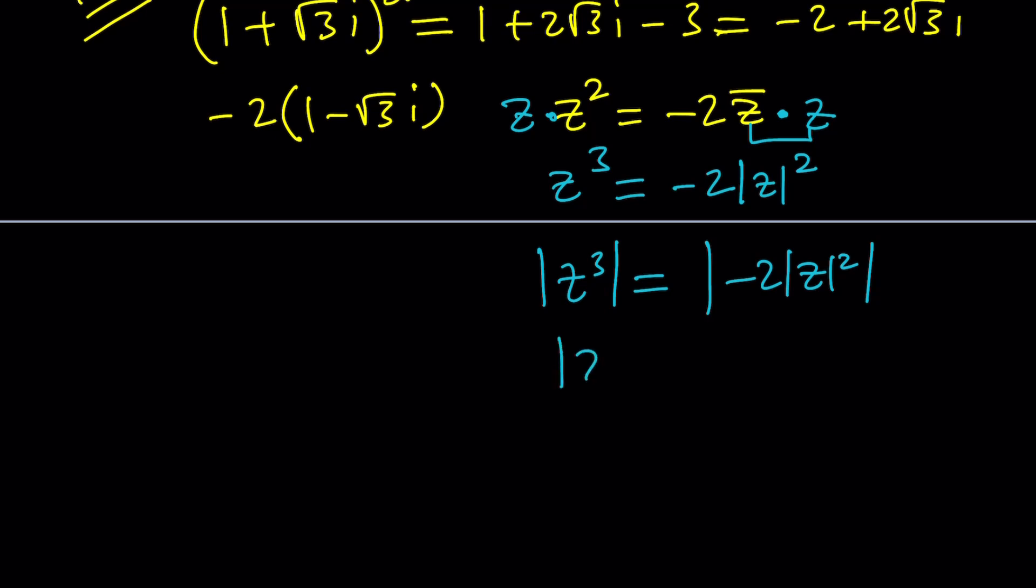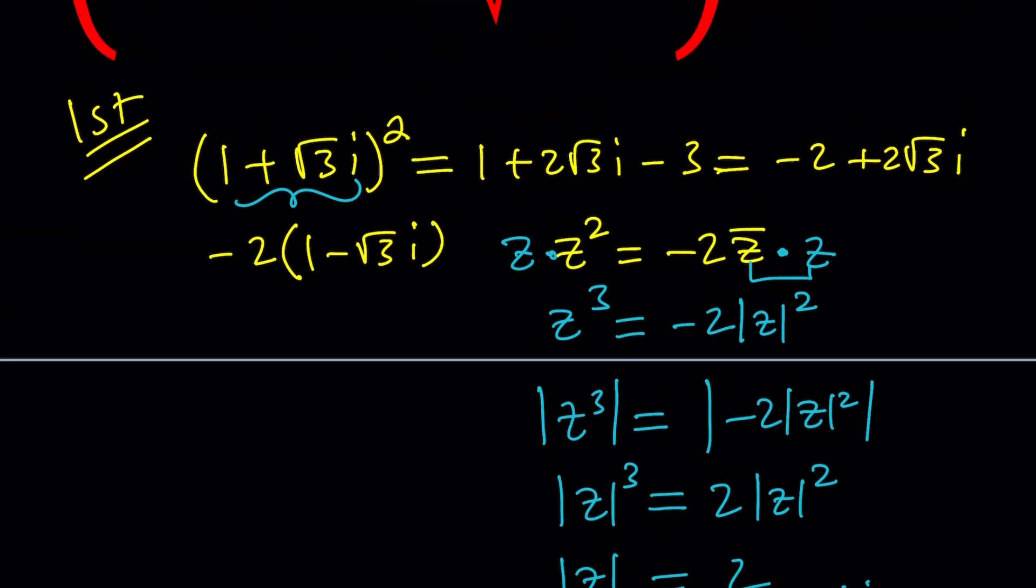And what is the right-hand side going to be? First of all, this is going to be the absolute value of z cubed. And this, can I write it as 2 times the absolute value of z squared? And then from here, can I safely say that the absolute value of z is equal to 2? Well, that doesn't really help, does it? Because all that gives me is the absolute value is 2, which I already knew. But anyways, we got to this point, and it's just inconclusive, at least in my opinion. Anyways, let's go ahead and take a look at a different approach within the first method.